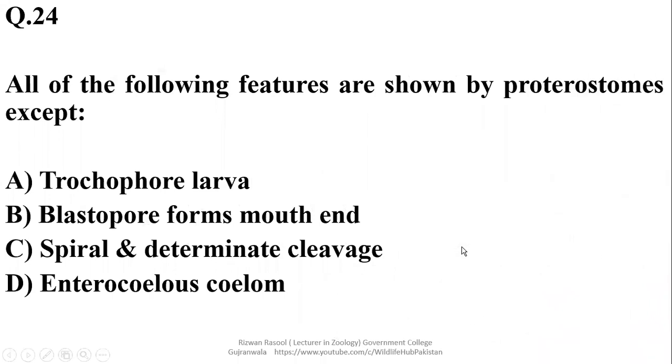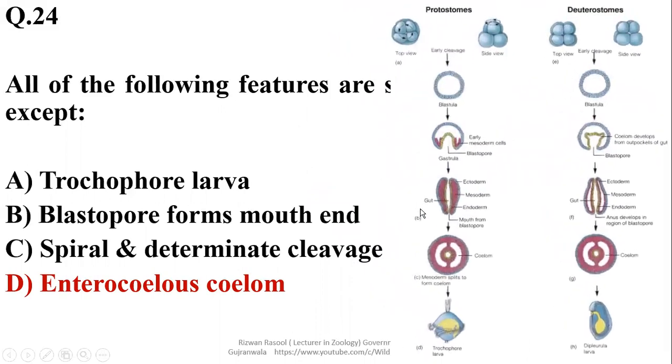All of the following features are shown by protostomes except: Protostomes they have trochophore larva, they have spiral and determinate cleavage, they have blastopore which forms the mouth. But they do not show enterocoelous coelom formation. Their coelom formation is schizocoelous that is formed by splitting of mesoderm, so right option in this case is delta.